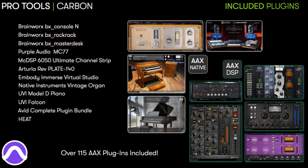When you buy Carbon it comes with a Pro Tools software subscription which includes the Avid Complete Bundle, giving you tons of DSP plugins. You also have the HEAT plugin for analog emulation in the Pro Tools mixer. Carbon also comes with a suite of third-party plugins: from Plugin Alliance you have the Brainworx BX Console N, Rock Rack, Master Desk and Purple Audio MC77, as well as the McDSP 6050 channel strip. These are all DSP plugins, ideal for tracking in DSP mode. Finally there is a plate reverb from Arturia and instruments from UVI and Native Instruments.